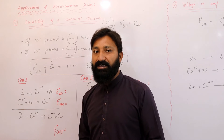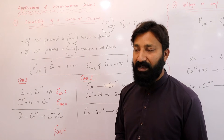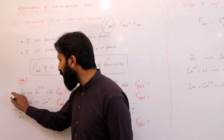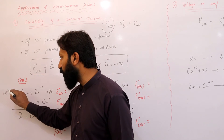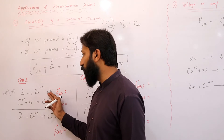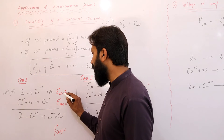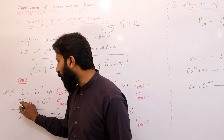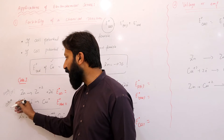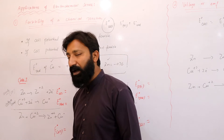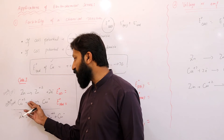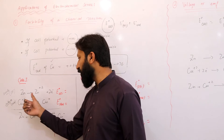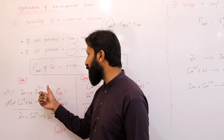इन दो elements के दरम्यान reaction की feasibility check करने के लिए अगर हम galvanic cell establish करें तो हमारे पास two cases हैं। Case 1: zinc की oxidation हो रही है — zinc anode की तरह behave कर रहा है। Zinc दो electrons remove करते हुए Zn²⁺ ion में convert होता है। इसी zinc anode के साथ galvanic cell बनाने के लिए copper cathode की तरह लेते हैं, जहाँ zinc से आने वाले electrons को gain करते हुए copper neutral atom में convert होता है।